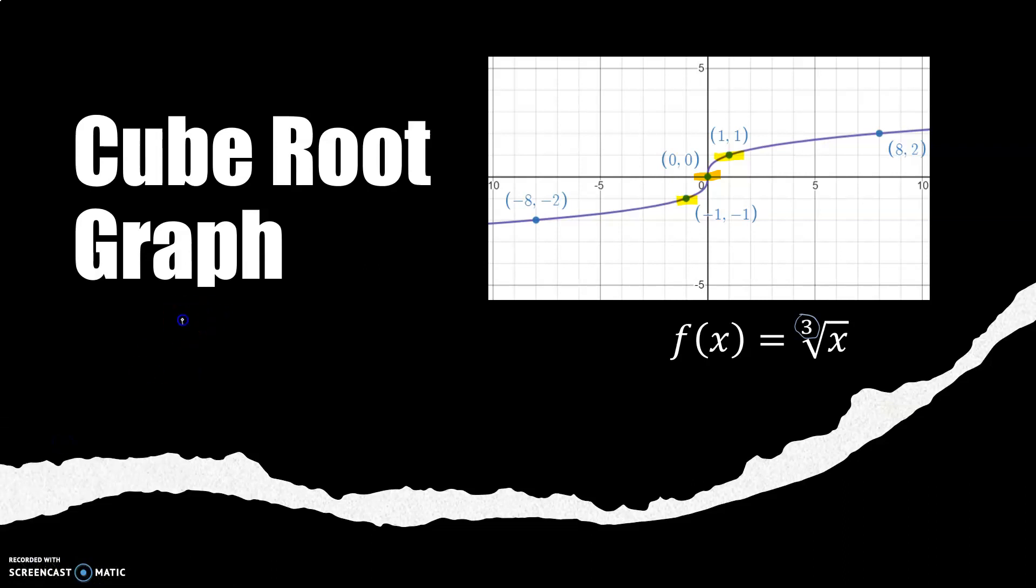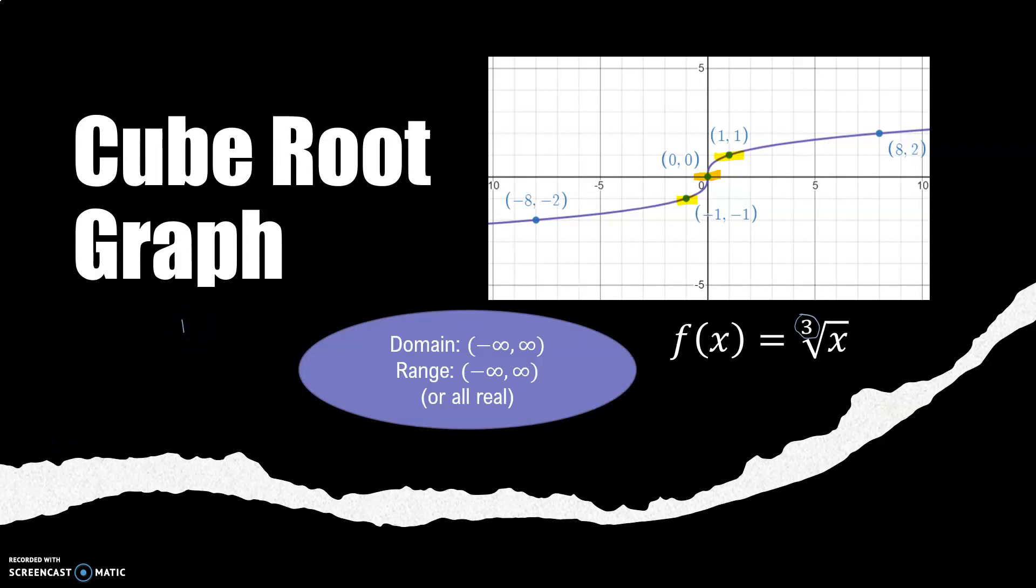This graph, the domain and range is easier. Those are all real numbers because both ends of the graph have arrows that continue on forever.